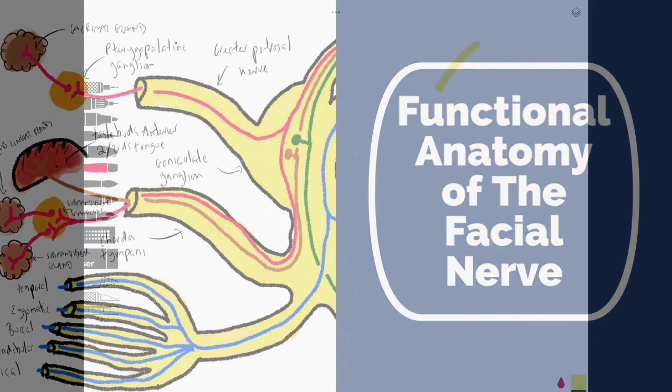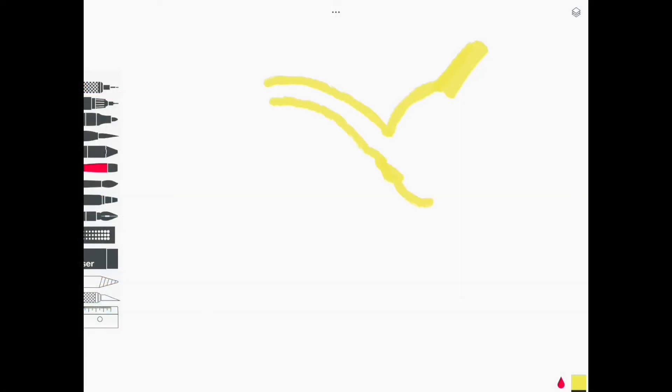Hello and welcome to this video covering the anatomy and function of the facial nerve, that's cranial nerve number seven. The facial nerve emerges from between the pons and the medulla on the lateral surface of the brainstem. It consists of a large motor root and a smaller nervous intermedius.